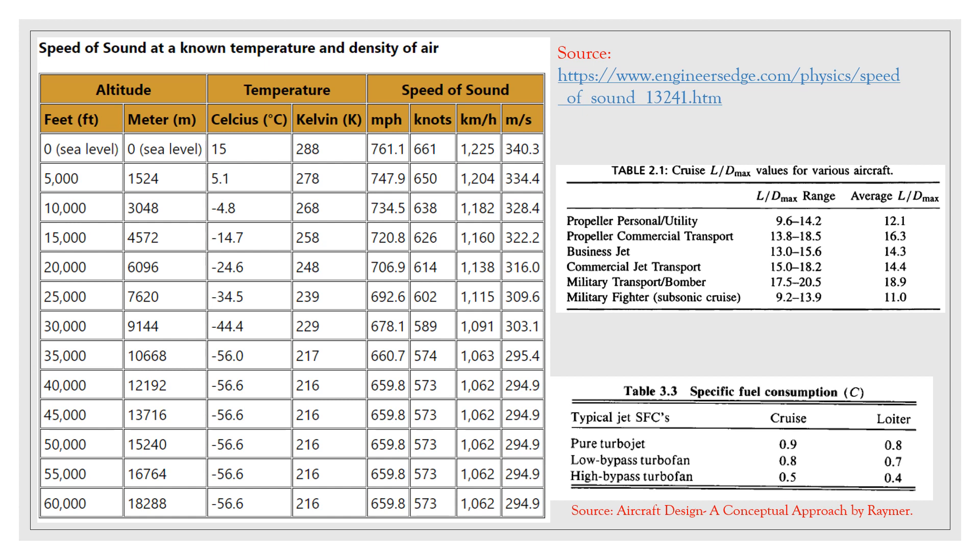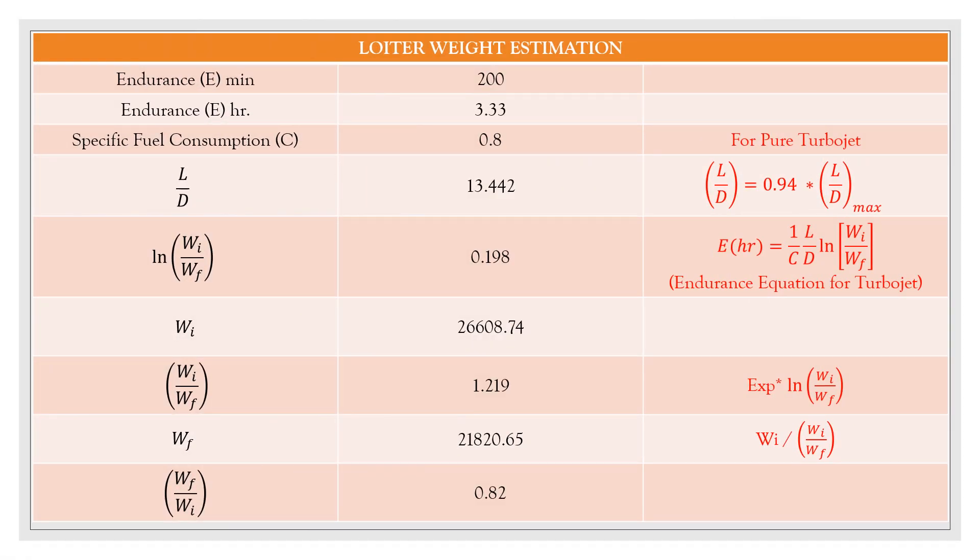The data used in cruise estimation has been referred from various resources. A table has been displayed in this slide where with respect to altitude, the speed of sound variations are being mentioned. Make sure the conversion from miles per hour or knots or kilometers per hour or meters per second to feet per second. And the calculation needs to be carried forward. The specific fuel consumption for the design type of engine has been mentioned. And the reference is from Aircraft Design: A Conceptual Approach by Raymer. And similarly, the average L by D max for different types of aircraft are being considered. So for our aircraft, that is a commercial jet transport, which is around 14.4. This value has been used and further calculations have been done.